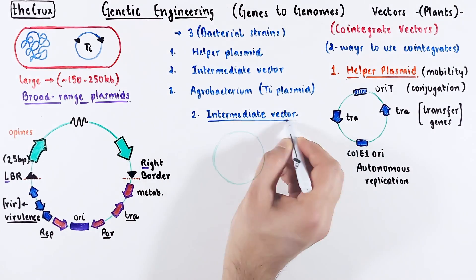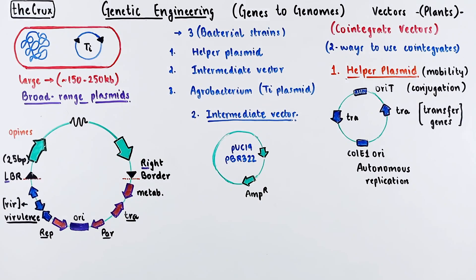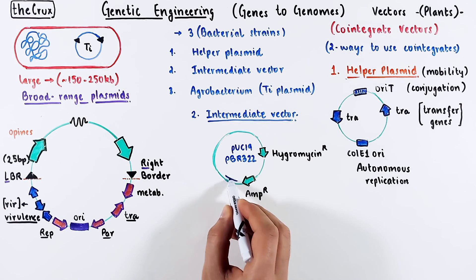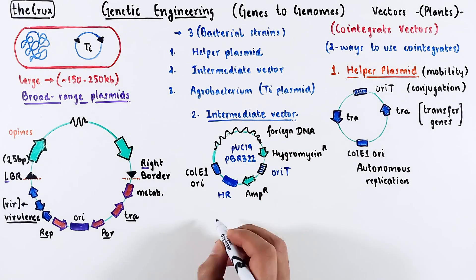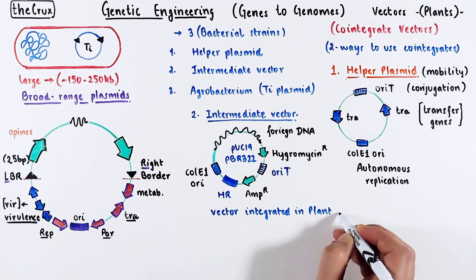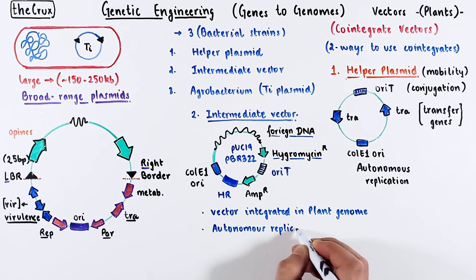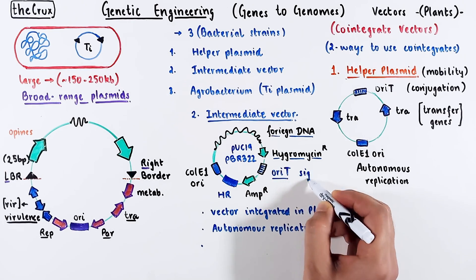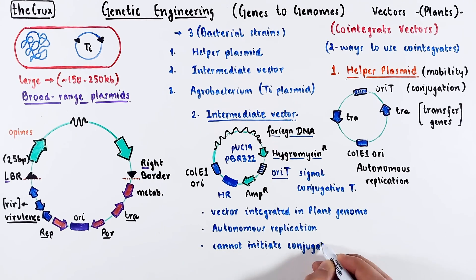The intermediate plasmid or vector is based on the pUC19 or pBR322 plasmid. It carries the hygromycin or the bacterial ampicillin marker. It has a homology region, and on top of this, it has two origins as well — one for replication and another for transfer. In this plasmid, you can insert any foreign DNA you would like. The intermediate vector is the final DNA that will eventually get integrated into the plant genome. This vector can replicate itself through the ColE1 plasmid origin. Given that ORI-T is meant for conjugative transfer in bacteria, the intermediate vector does not have any transfer genes, so it cannot actually initiate conjugation.